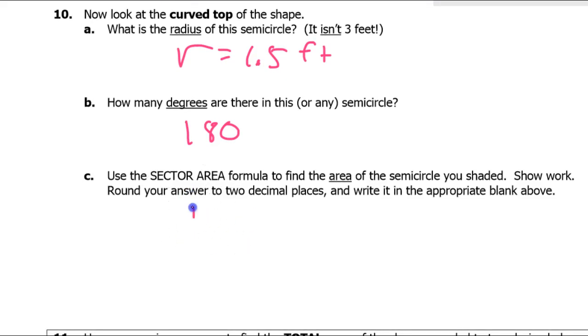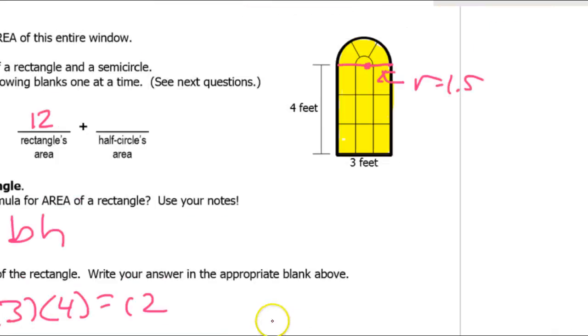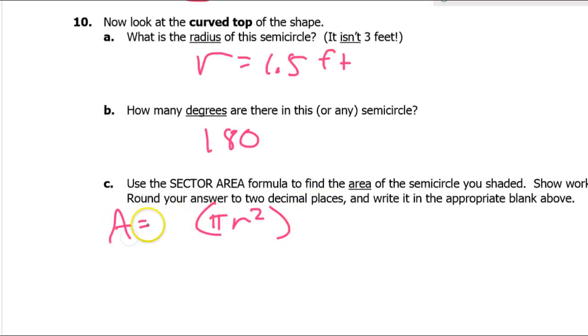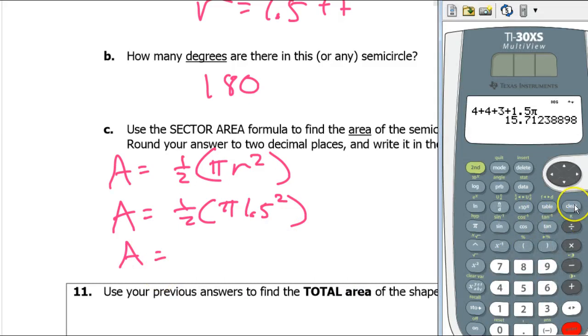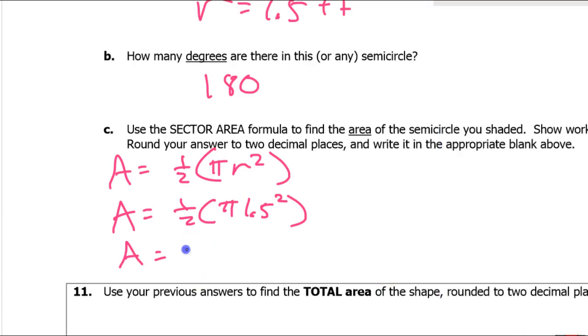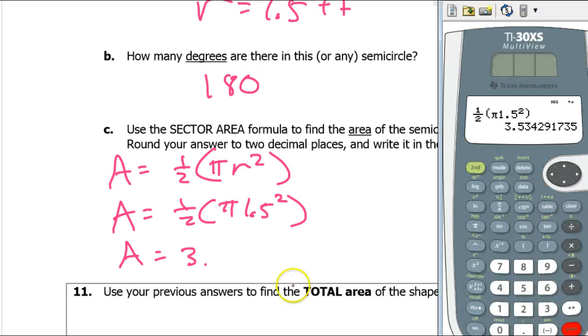The formula for the area of a whole circle is pi r squared. But this is going to be half of a circle, half that area. So this area is going to be half of this pi r squared. So it's going to be half of pi times one point five squared. We're just going to have to get some decimals and live with it. So one half pi one point five squared. That's going to be three point five three.